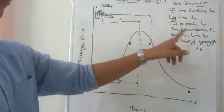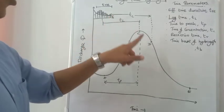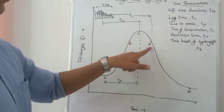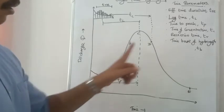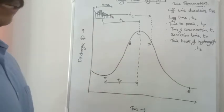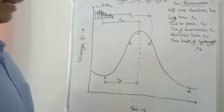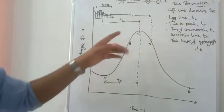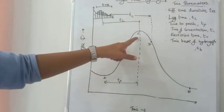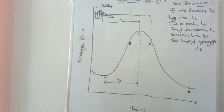Tc — time of concentration — is from the end of effective rainfall to the start of the recession limb, or the point T. Then recession time, TR, is the recession duration of the single peak hydrograph.